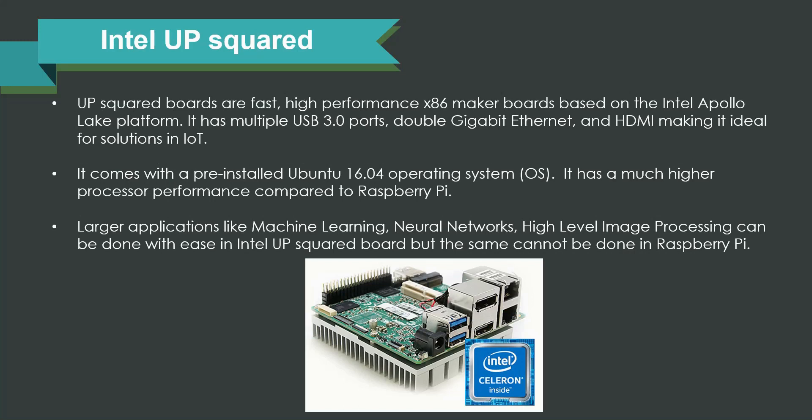UP2 boards are next to be discussed. They are high-performance x86 maker boards based on the Intel Apollo Lake platform. They have multiple USB 3.0 ports, dual gigabit Ethernet ports, and an HDMI port, making them ideal for building real-time IoT solutions. They come with a pre-installed Ubuntu 16.04 operating system and feature much better processor performance compared to Raspberry Pi, supporting the Intel Celeron processor. Larger applications including machine learning, neural networks, high-level image processing, and deep learning can all be done with the Intel UP2 board.